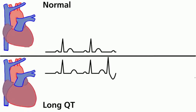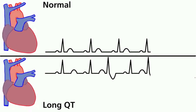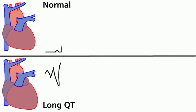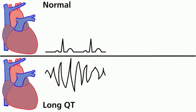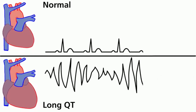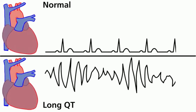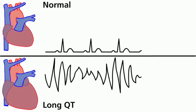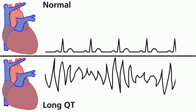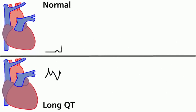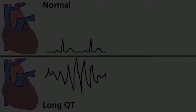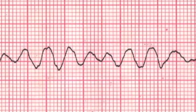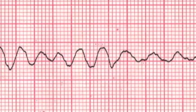Torsade de pointes is named for the characteristic appearance of a rotating QRS axis on ECG reading. This abnormal rhythm can lead to syncope, seizures, or cardiac arrest, and without treatment may progress to ventricular fibrillation.